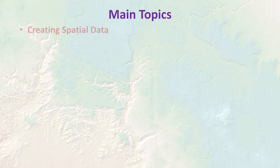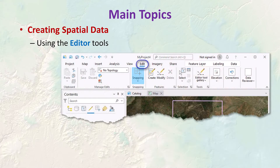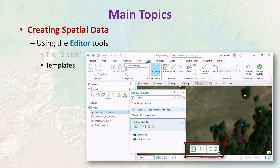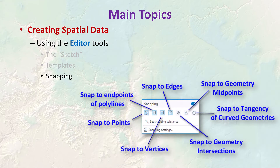We're going to cover three common methods for creating spatial data in this lecture. First off, the heavy-duty work in vector data is done using the sketch and the editor tools. The editor toolbar has several tools that allow you to draw or sketch the geometry right on the map. Editor tools use something called templates, which makes it easier to create data that fall into predefined categories. And we're going to learn about setting the snapping environment, which allows us to create new vector data that are guaranteed to connect correctly with adjacent or coincident features.